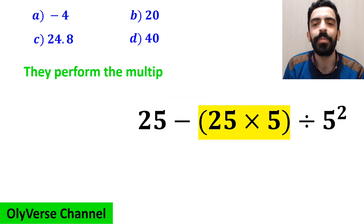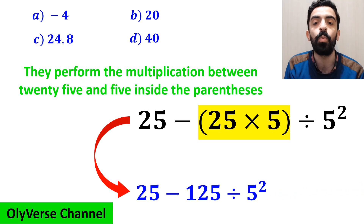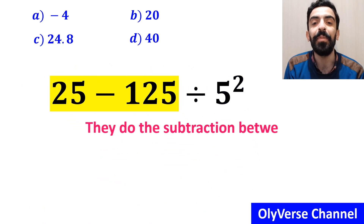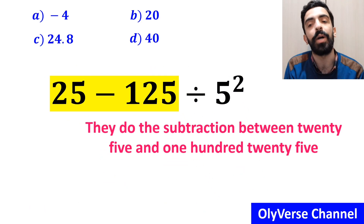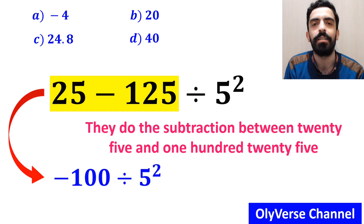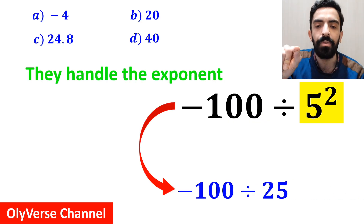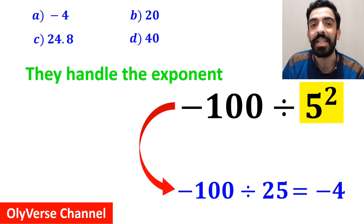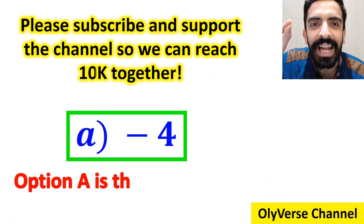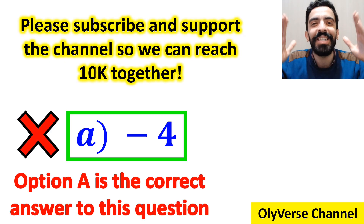Then they perform the multiplication between 25 and 5 inside the parenthesis, writing the expression as 25 minus 125 divided by 5 squared. Next, they do the subtraction between 25 and 125, simplifying to negative 100 divided by 5 squared. Finally, they handle the exponent, getting negative 100 divided by 25, which gives them negative 4. They conclude that option A is the correct answer — however, that's definitely wrong.